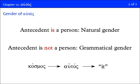When this word is referring back to a person, the word follows natural gender. If it's autos, it's he or a generic. If it's autai, it's she. But if the antecedent of this word is not a person, then the word does not follow natural gender — it follows grammatical gender. For example, if the antecedent is cosmos, you'll use the masculine form, but you wouldn't translate autos as 'he' because the antecedent is cosmos, meaning 'world,' which in English we refer to as 'it.'